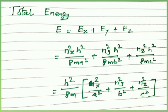The total energy for the three-dimensional box is E = Eₓ + Eᵧ + E_z, where Eₓ = nₓ²h²/8ma², Eᵧ = nᵧ²h²/8mb², and E_z = n_z²h²/8mc². This gives the total energy: E = (h²/8m)(nₓ²/a² + nᵧ²/b² + n_z²/c²). This is an important equation for the three-dimensional box.